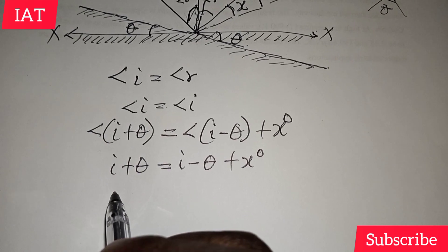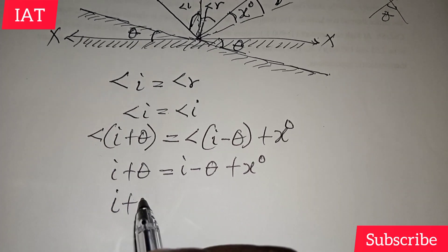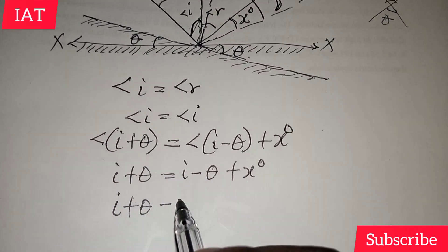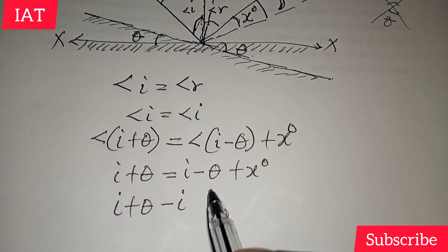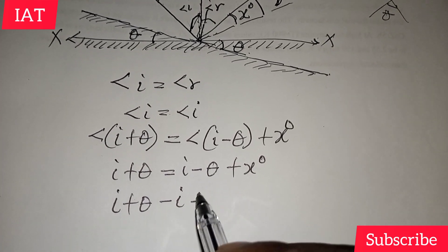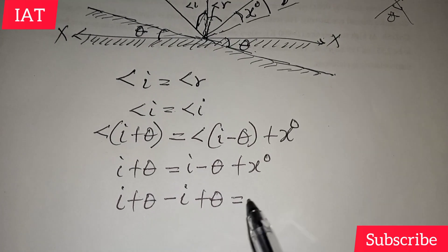So let's collect terms. We have that i+θ minus, if this crosses, we have -i. Okay. If this crosses, we have +θ. And this will be equal to x degrees.